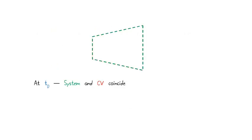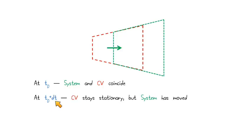What I want to look at here is how we're going to lay this problem out, just by looking at an example of a system and control volume. At some time t0, we've got a control volume, and our system is going to be defined as the mass in that control volume — so the system and the control volume coincide initially. Then what's going to happen is we allow some time dt to go by. The control volume stays stationary, but the system will have moved out to the right, expanded a little, and changed its size and shape.